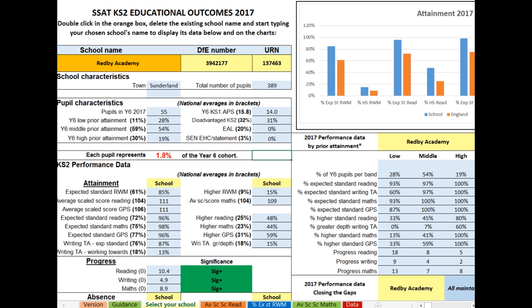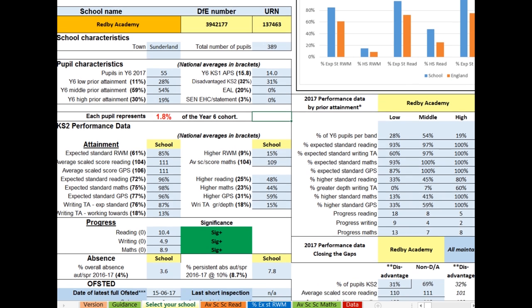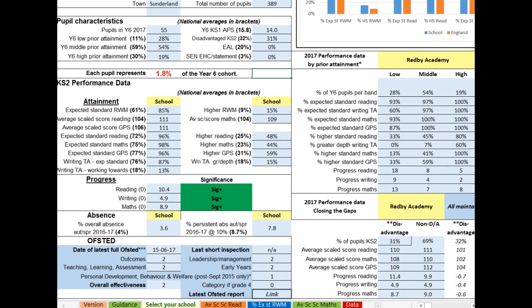Moving down the page, we've separated out attainment and progress measures. You'll notice that we've included results at both the expected and higher standards for each of the key measures, and both scores and significance for progress. Finally, for the left-hand side, there's overall and persistent absence. These figures are for the autumn and spring terms only.